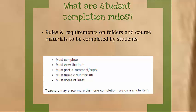Your options include: students must complete an assignment, they must view the item for documents and links, they must post a comment or reply, they must make a submission. And for tests, quizzes, assignments, and discussion boards, you can say they must score at least a certain amount. For example, if it's a 25-point quiz, you can set it so they have to score at least a 20 before they can move on.